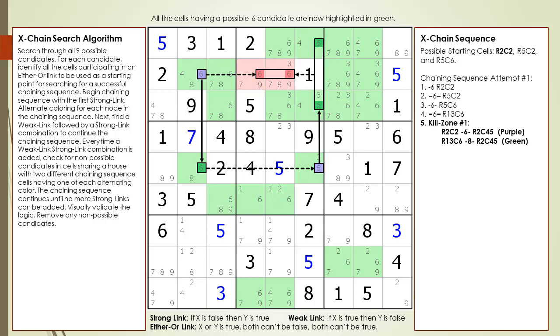In both cases, having or not having a 6 in our starting cell results in our target candidates in the kill zone being killed.